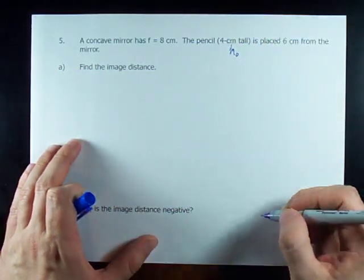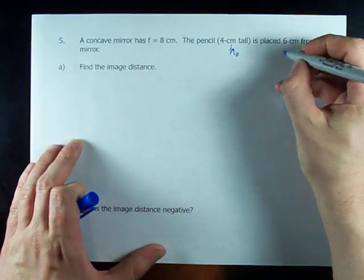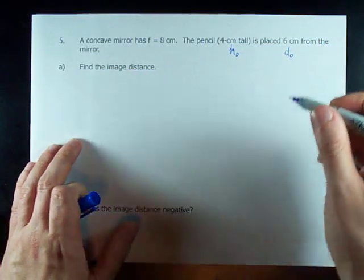And we have where it is, 6 centimeters away from the mirror. So that is the distance of the object, D_O.